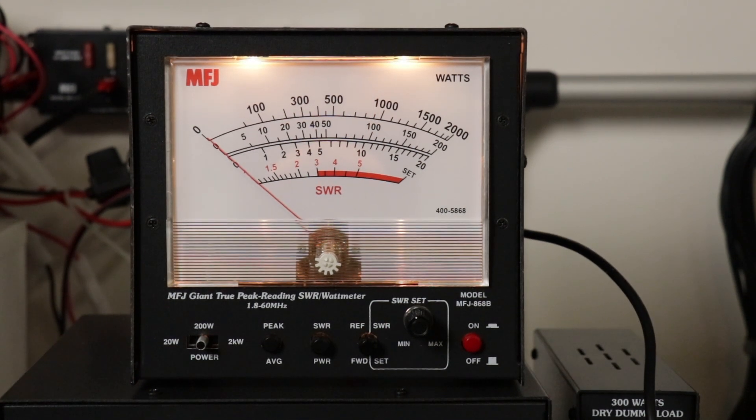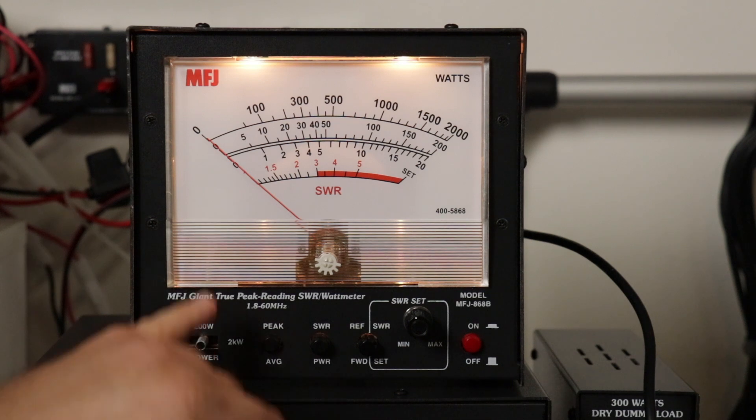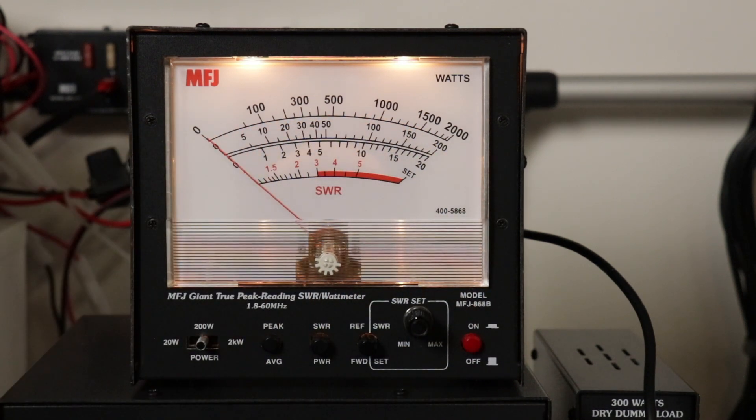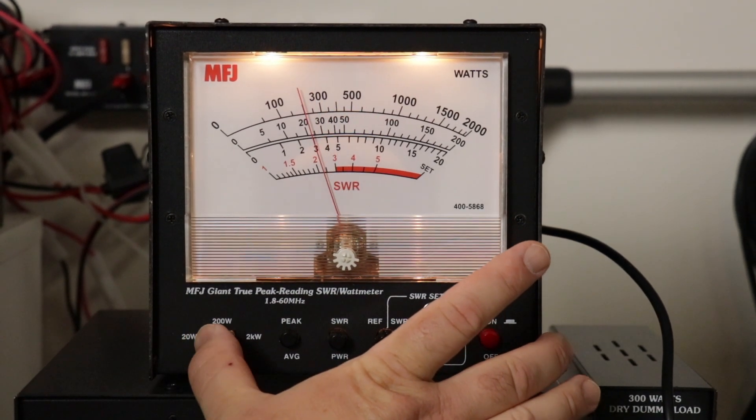Now I have the radio set at 100 watts. Show you 200 watts on the scale, which is the center scale right there. And on 2000 watts.